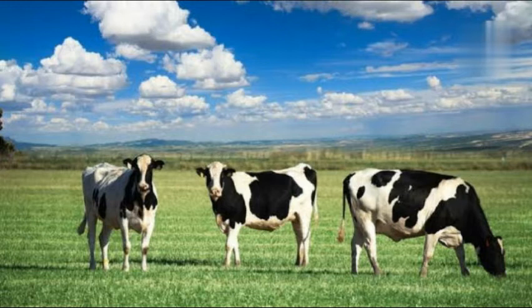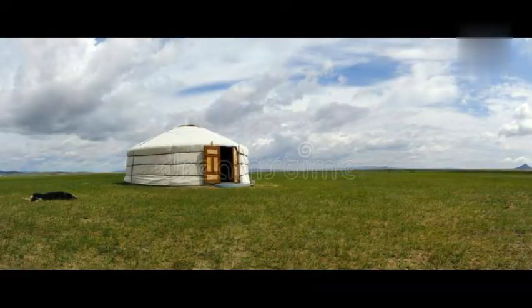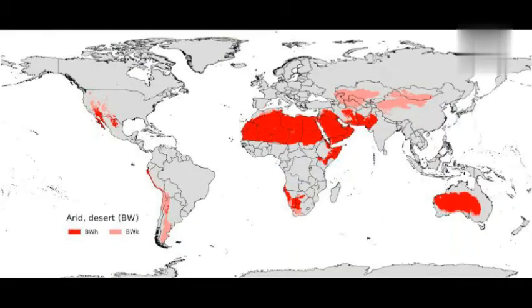Earlier people had a nomadic life, living in hide tents and yurts. Kyrgyz people are no longer nomadic now — they stay in well-built houses and grow wheat and other feed crops.